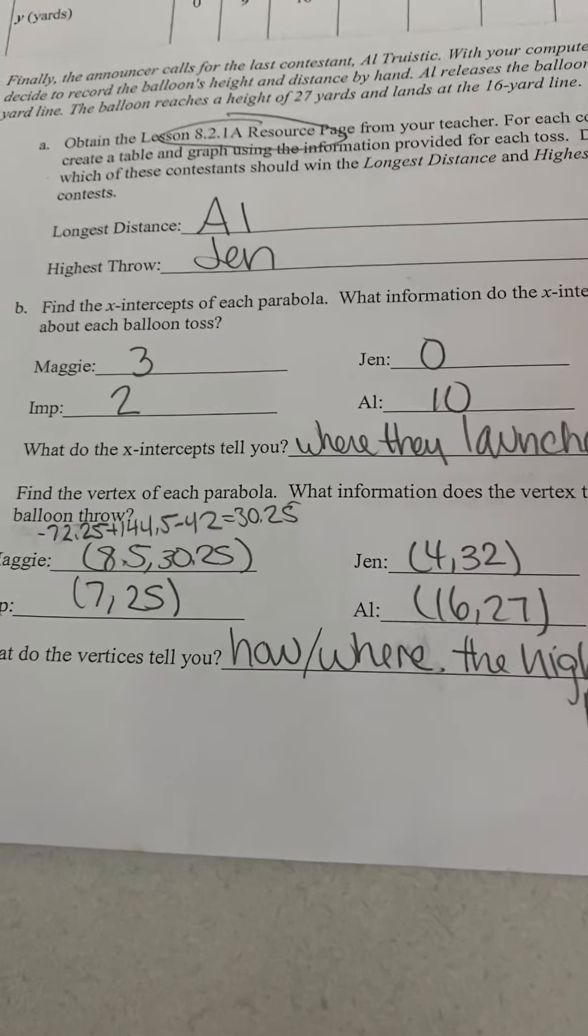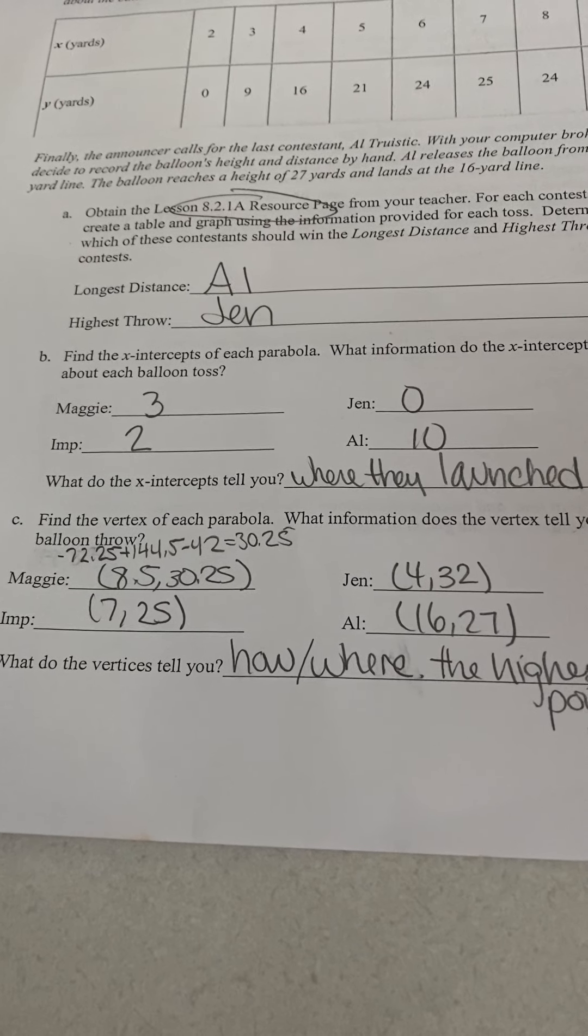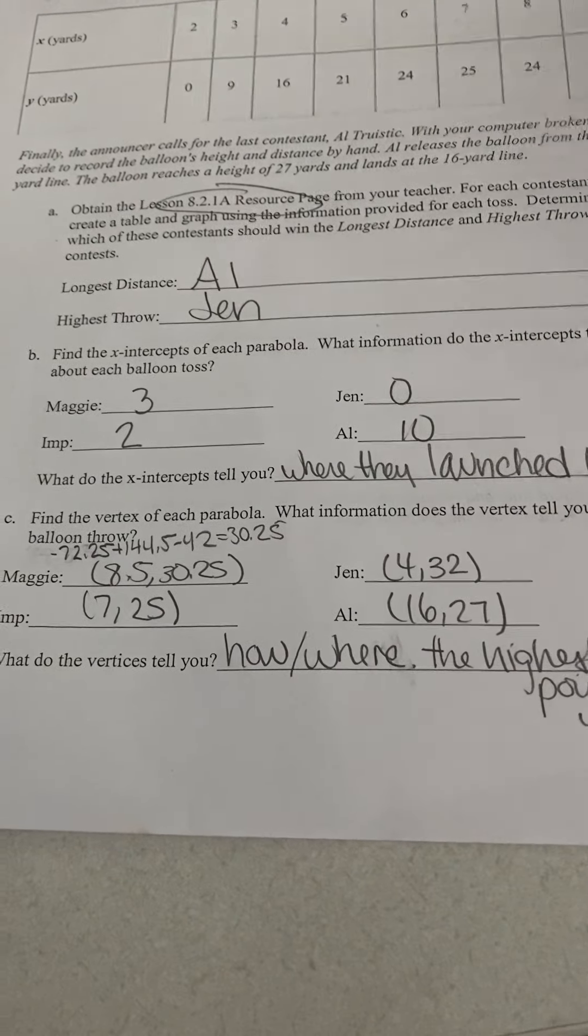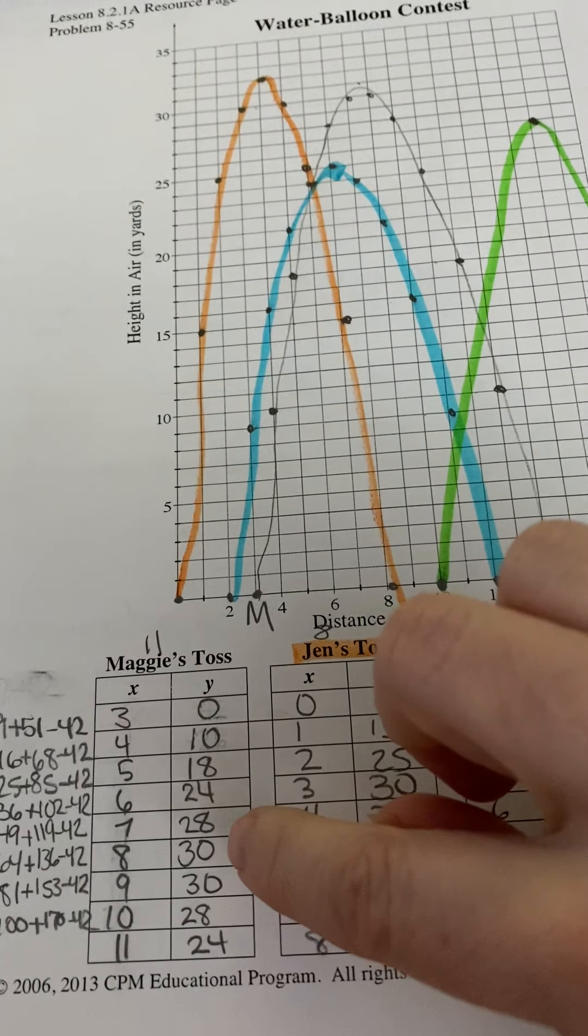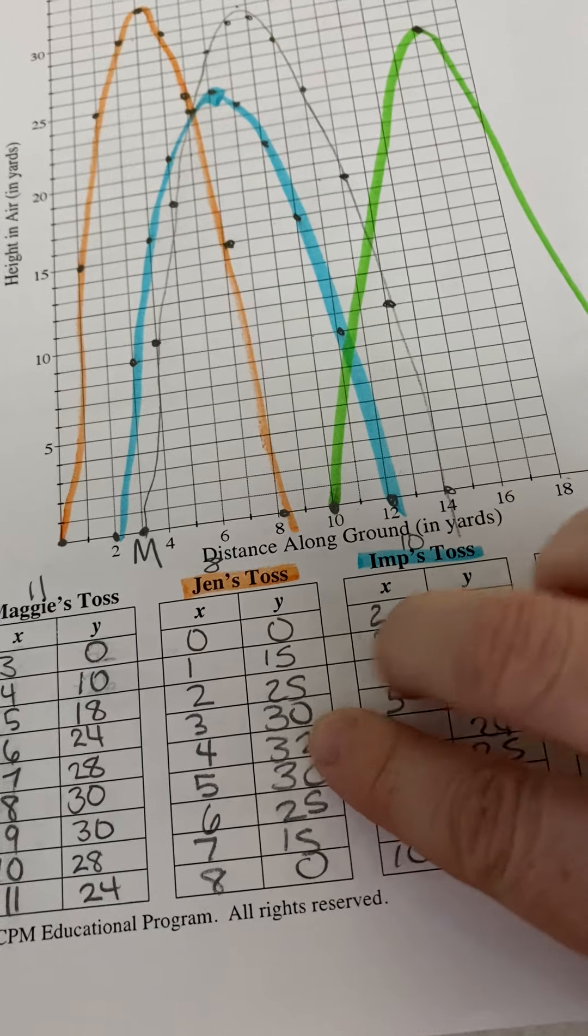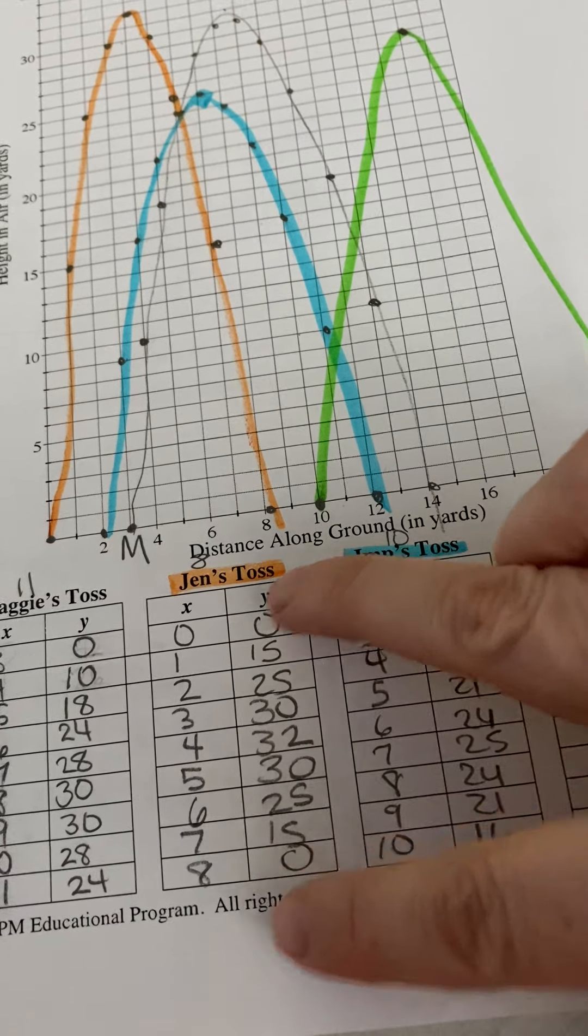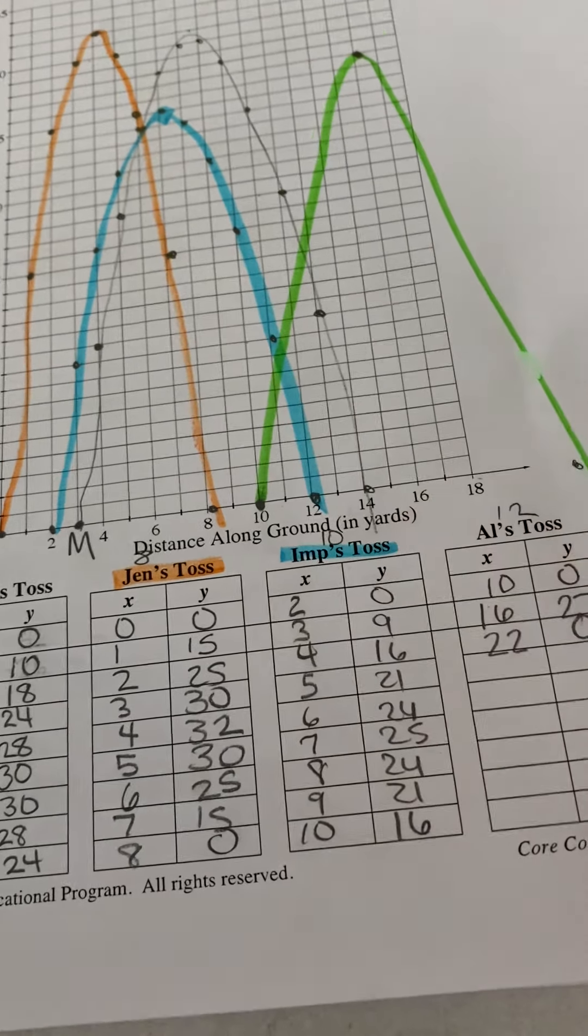And then it says, find the vertex of each of the parabolas. What information does the vertex tell you about each one of them? So, the vertex is going to be the highest point. So, that's going to be when you look at a table where they start repeating. So, like here it gets to 32 and then it starts going backwards. This one gets to 25 and then you start seeing it going back downhill.